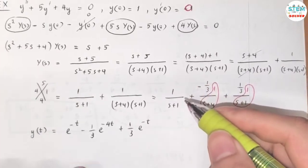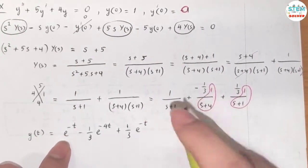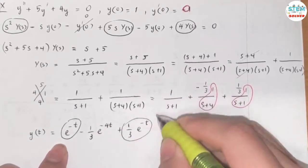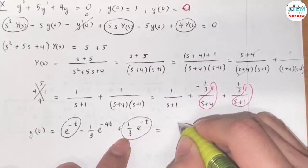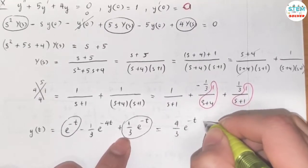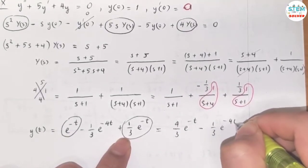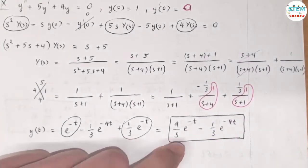Now combine. You have e^(-t), so simplify this by combining this and this, then you have four-thirds e^(-t) minus one-third e^(-4t). So this is your final answer. That's it.